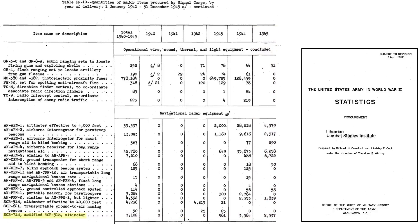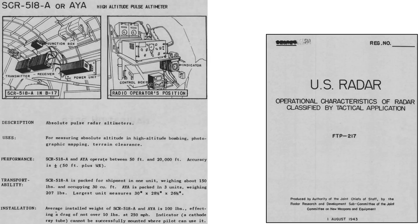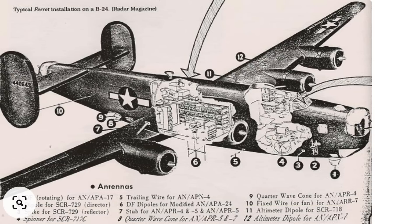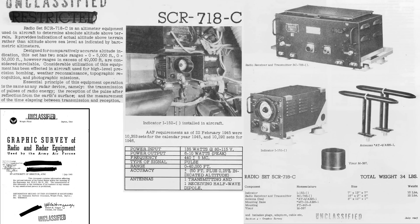The SCR-718 is an upgraded SCR-518. This image shows the older SCR-518 components installed on a B-17, where the altitude range is limited to only 20,000 feet. The excrescence drag from the external antenna equates to 10 pounds. This image also shows the SCR-718 system installed on a B-24 ferret, item 11. This page provides a description and components of the SCR-718 system from a 1945 Army Air Forces document on radio and radar equipment.